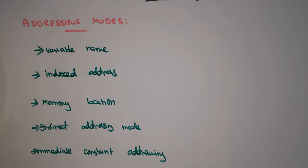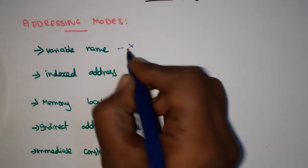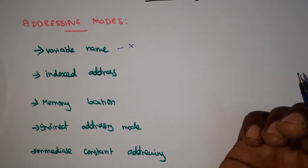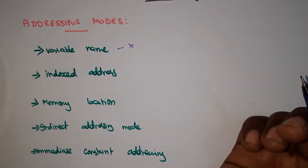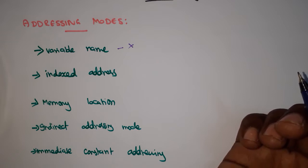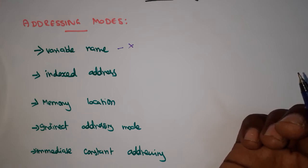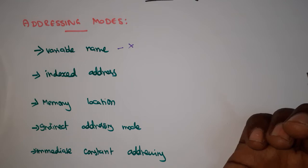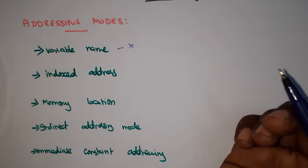The first addressing mode is the basic one: a variable name. When we call a variable name, the value stored at that memory location is accessed directly. For example, when you have x = y + z, you can load the value of x directly into a register by referencing x. This is the most basic addressing mode.